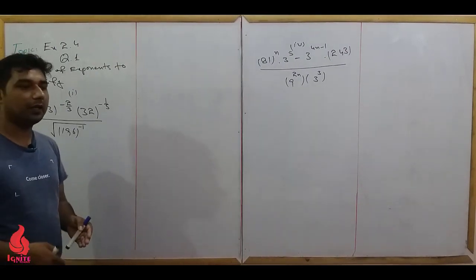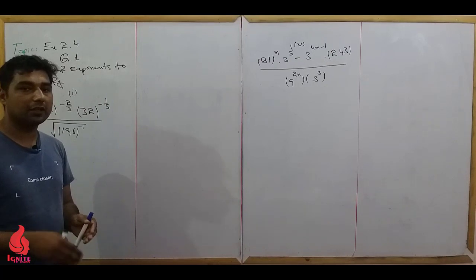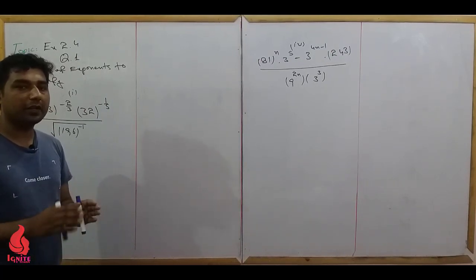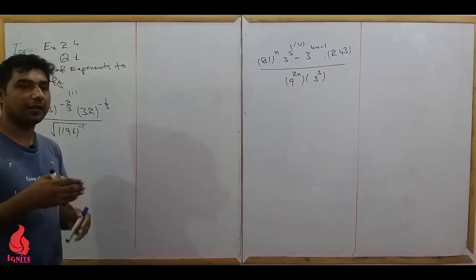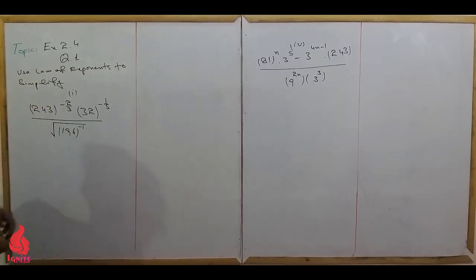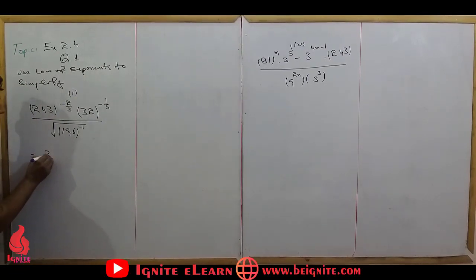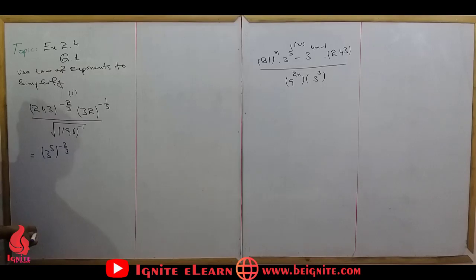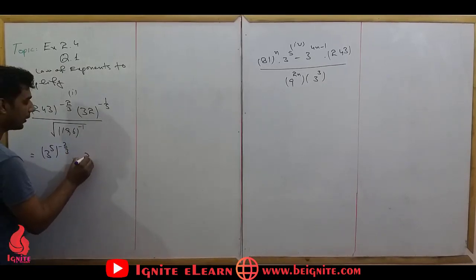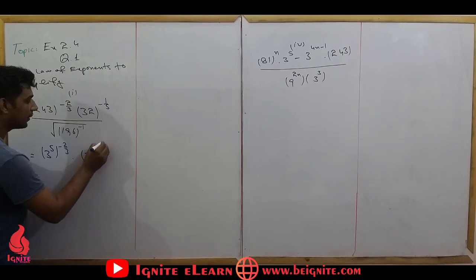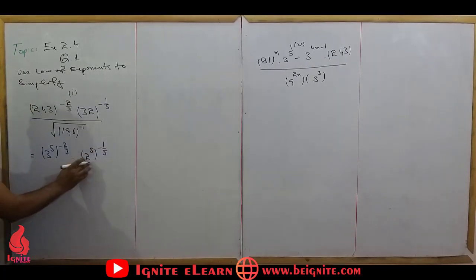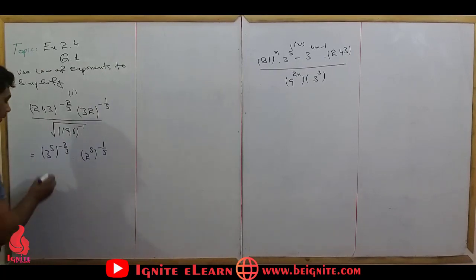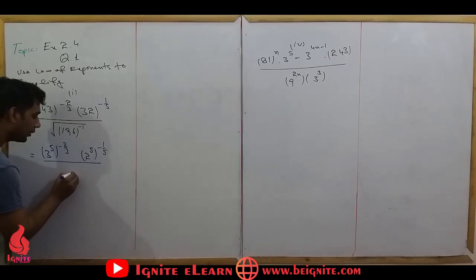For the first part, we have large numbers which we need to convert to smaller base integers. We convert 243 to 3 raise to power 5, whole raise to power minus 2 over 3. And 32 we convert to 2 raise to power 5, whole raise to power minus 1 over 5. These are the prime factorizations — we find the prime factors of each number.